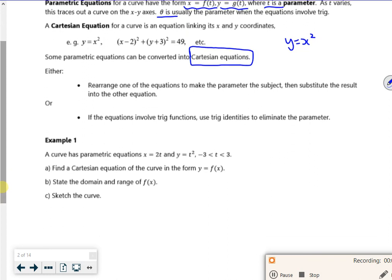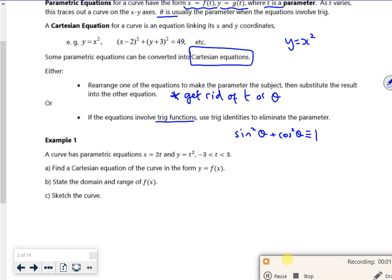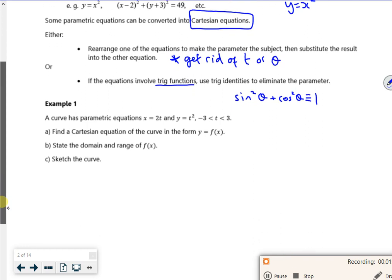It says generally rearrange one of the equations to get rid of the parameter, the t or the theta. If it involves trig, use trig identities to eliminate it. A lot of the time we'll use sine squared theta plus cos squared theta equals one, because that's where the circle comes from. But sometimes you have to use a different one.